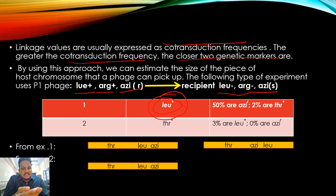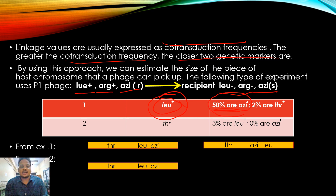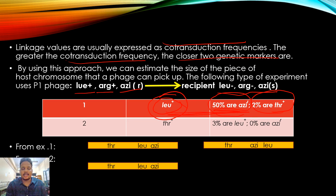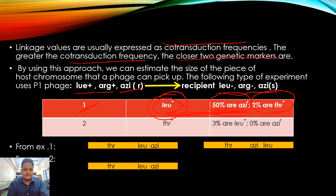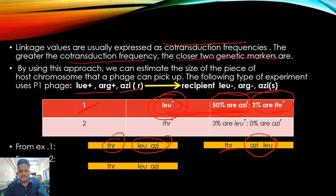Out of the bacteria, around 50% show growth for leucine and about 2-3% show growth on the threonine-negative media. This means leucine is linked with arginine, but threonine is far away. Leucine's position is confirmed: leucine is near arginine, but threonine is far from leucine.